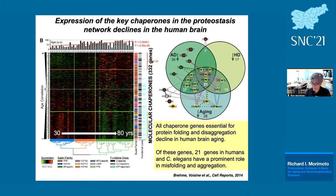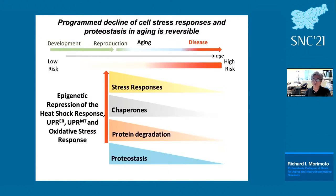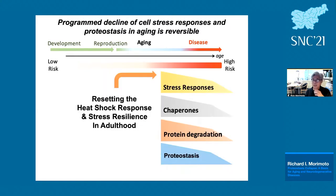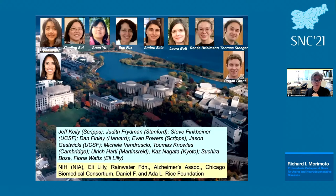What I've told you about today is the critical role of stress responses, chaperones, the quality control machinery, and proteostasis, and that there is a genetic switch that shuts it off. Our hope is that it is possible to reset this system — to delay the onset of molecular failure. Thank you to many people from my laboratory, wonderful collaborators around the world, and sources of funding.